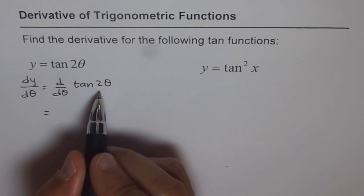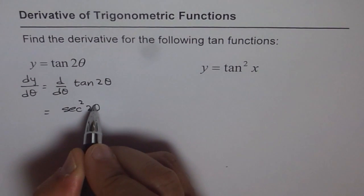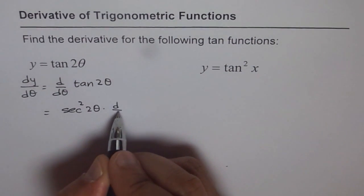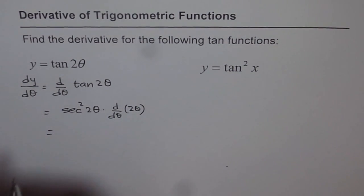We have to multiply that by the derivative of 2θ also. So we can write this as sec² 2θ times d/dθ of 2θ. That's the chain rule.